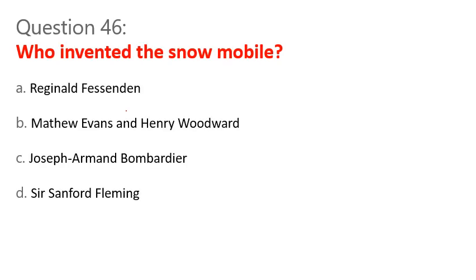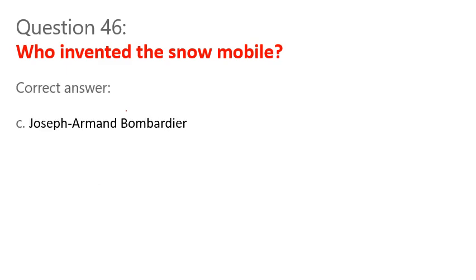Question 46. Who invented the snowmobile? A. Reginald Fessenden. B. Matthew Evans and Henry Woodward. C. Joseph Armand Bombardier. D. Sir Sanford Fleming. Correct answer: C. Joseph Armand Bombardier.